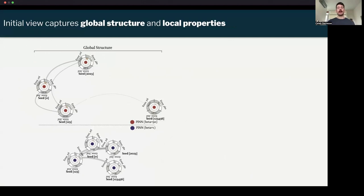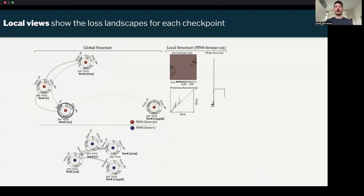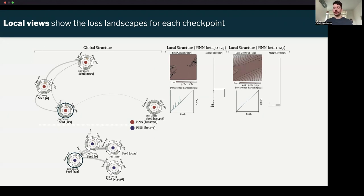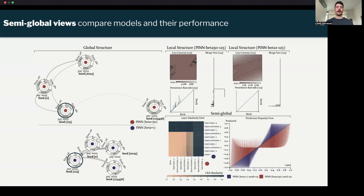When you open up LossLens, we show this global structure with some of these annotated local properties. You can select one of the checkpoints, and we will show the local loss landscape, along with some additional metrics from topological data analysis to help capture the shape of the local landscape. You can select a second model, and we'll also show the local structure there. Then there's also a semi-global view, which captures model comparison. We're comparing performance. We're also showing layer-wise CKA similarity to show how different layers are similar to each other. This is one of the flexible parts of the framework, where depending on if you're doing classification or regression, we can show different things.